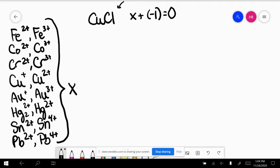If there's no charge indicated here, then it is a compound, and the sum of the oxidation states adds up to zero. If there was a charge there, it would be a polyatomic ion, and it would be a different story. So in this case, x equals plus one when you solve for x. So this is copper one chloride. The roman numeral indicates the charge on the metal.